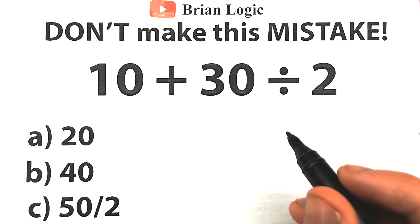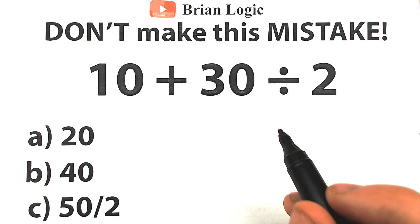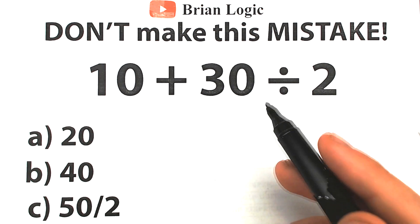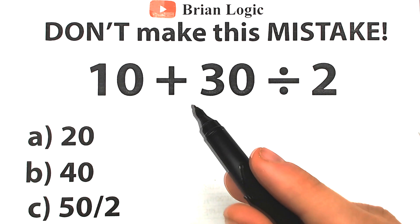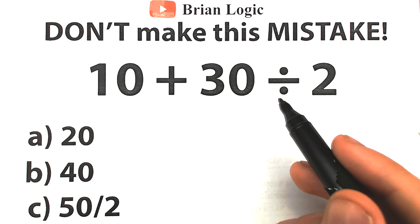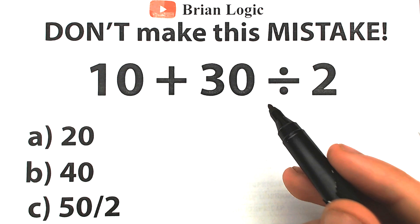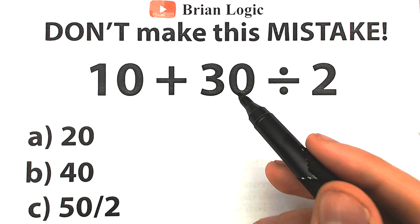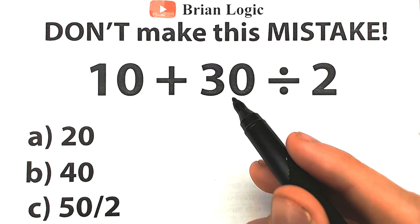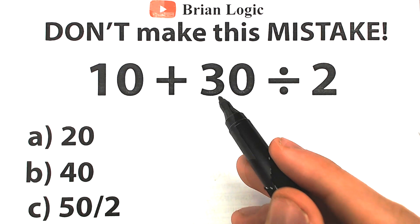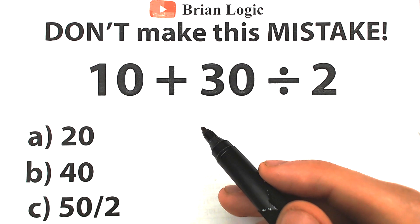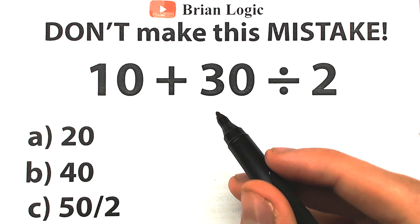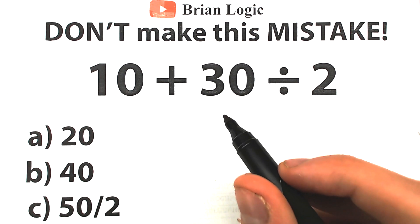Welcome back to my channel BrainLogic. Let's figure out this super simple math problem right here. We have 10 plus 30 divided by 2. Seems pretty basic, seems pretty easy. Everyone learned this stuff in the third grade — we have addition, we have division, and not huge values: 10, 30, and 2. So go ahead and put your answer down into the comment section and I will show you the correct answer here in just one minute.